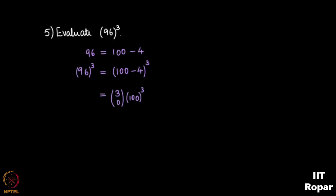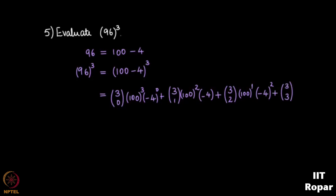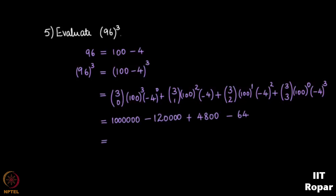Expanding (100 − 4)³: 3C0·100³·(−4)^0 + 3C1·100²·(−4)^1 + 3C2·100^1·(−4)² + 3C3·100^0·(−4)³. After simplification this gives 884736. I'll leave the intermediate steps for you to verify.